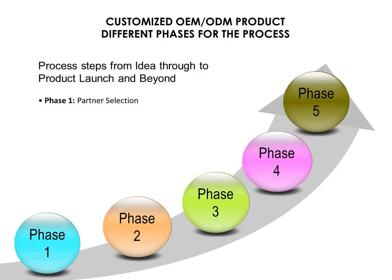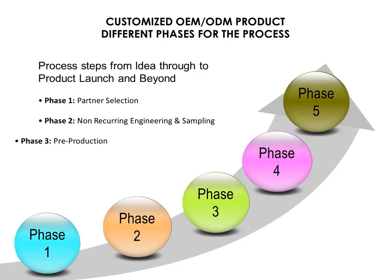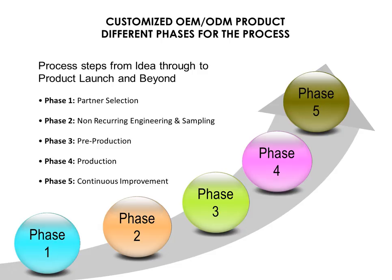Phase 1: Partner Selection. Phase 2: Non-recurring Engineering and Sampling. Phase 3: Pre-production. Phase 4: Production. Phase 5: Continuous Improvement.